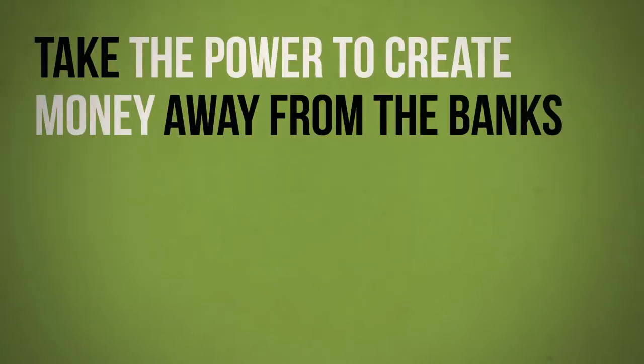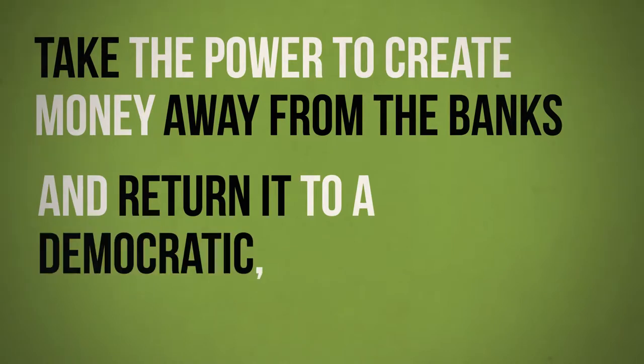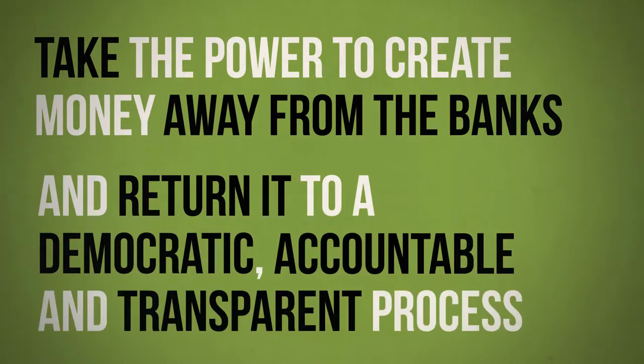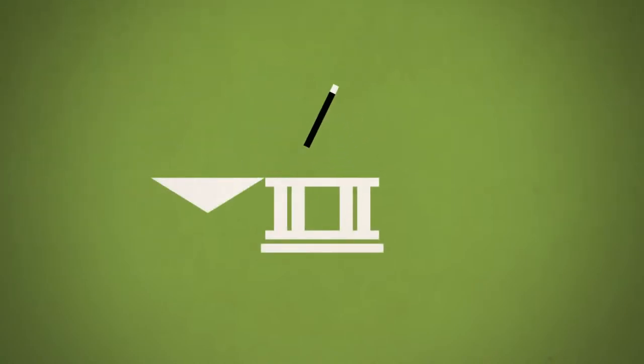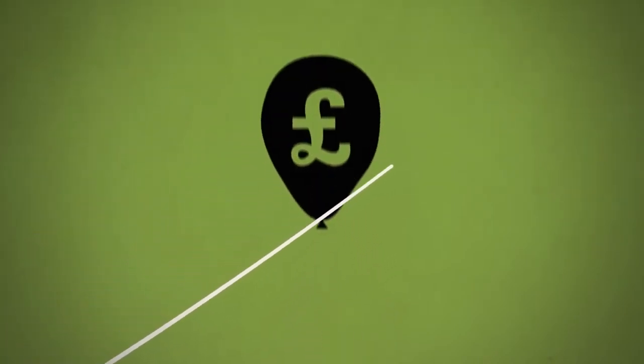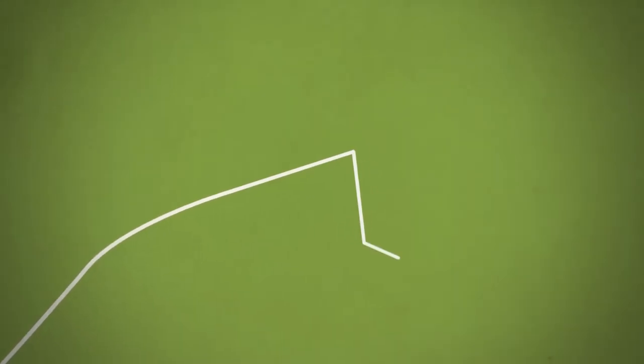Firstly, we need to take the power to create money away from the banks and return it to a democratic, accountable, and transparent process. History has shown that when banks have the power to create money, they create too much in the good times, causing financial crises, and too little in the bad times, making recession and unemployment even worse.